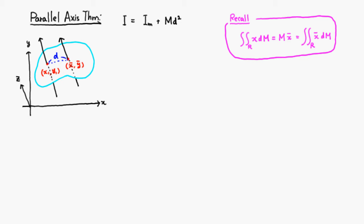Let's look at the parallel axis theorem, which states that the moment of inertia about any point can be expressed as the moment of inertia about the center of mass, plus the total mass times the distance between these two axes squared.